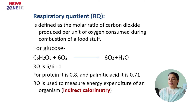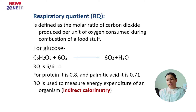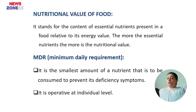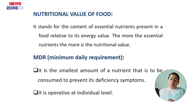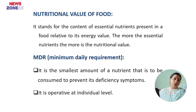Respiratory quotient is used to measure energy expenditure of an organism. It is called indirect calorimetry, as I have said before. Nutritional value of food stands for the content of essential nutrients present in a food relative to its energy value. Foods that provide more energy have more essential nutrients, and this is the ratio of the nutritional value of the food.